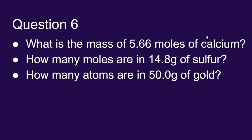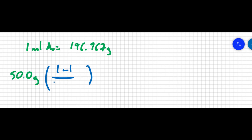Now let's find how many atoms are in 50 grams of gold. If I start with 50 grams of gold, I know from looking at the periodic table that one mole of gold is equivalent to 196.967 grams. So I can right off the bat say that one mole is equivalent to 196.967 grams, and my grams cancel out.